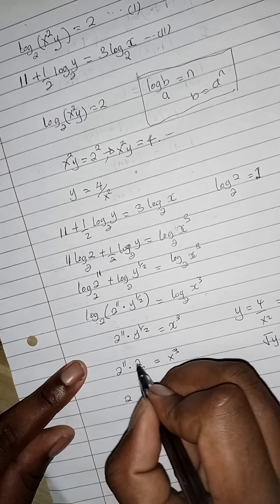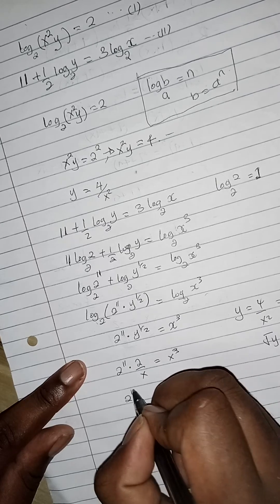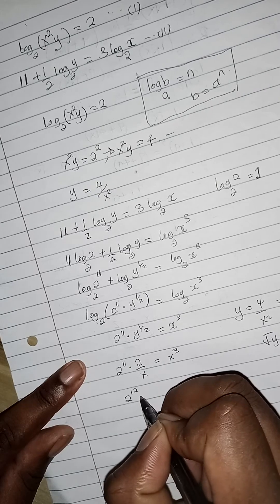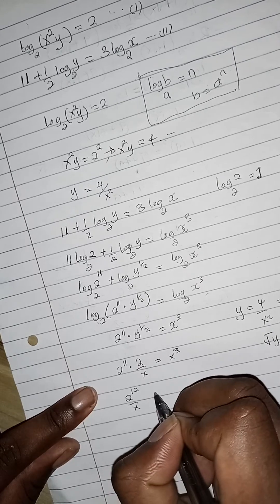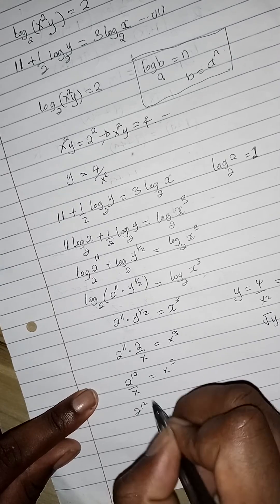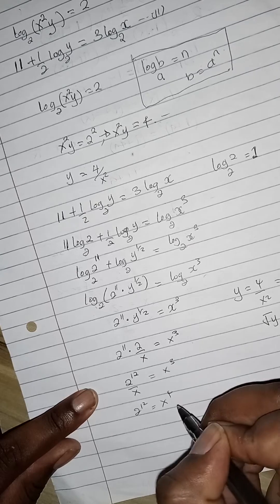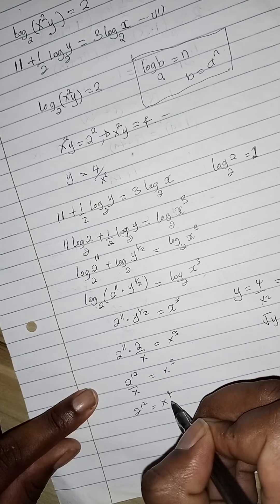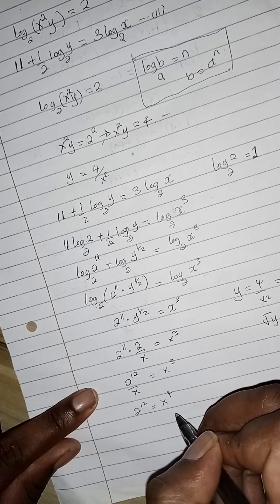Now 2 raised to power 12 all over x equals x cubed. 2 raised to power 12 equals, if you cross multiply, x raised to power 4.